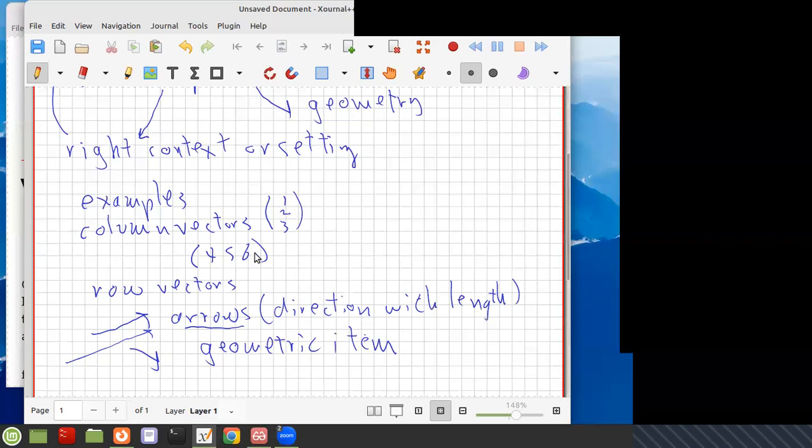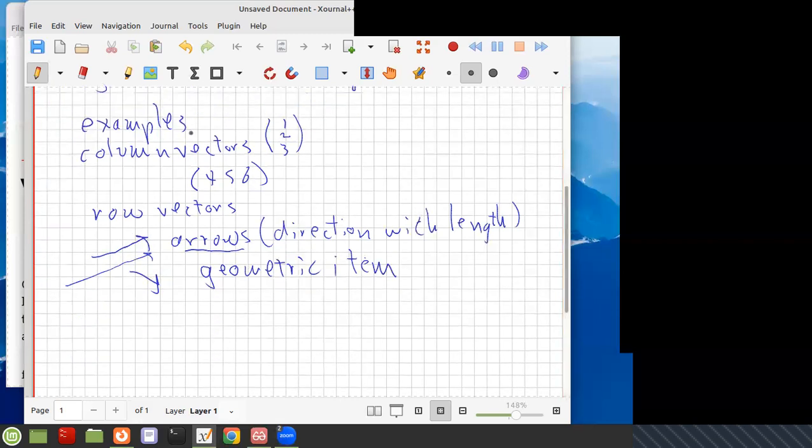And so these things are what's used in physics and engineering to model various other things. So we're not going to go into those applications, but we have this first example of column vectors or row vectors, and then we have the second example which is going to be geometry.